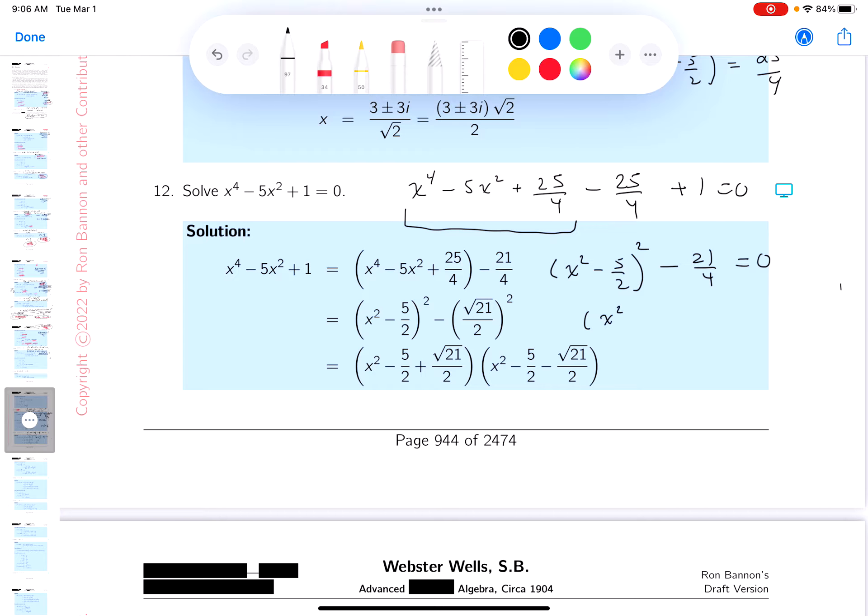That's going to be x squared minus 5 halves, and that's going to be, let's see, minus root 21 over 2, and then you get x squared. Let's see what I did. I did something funny here. Oh no, I didn't do anything funny. Let's keep going.